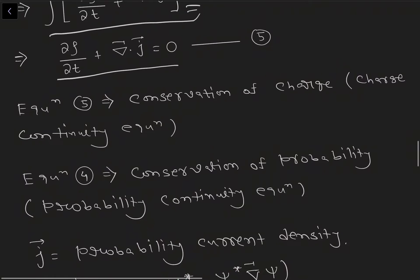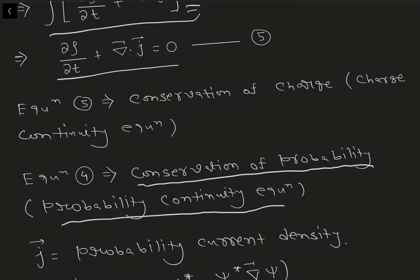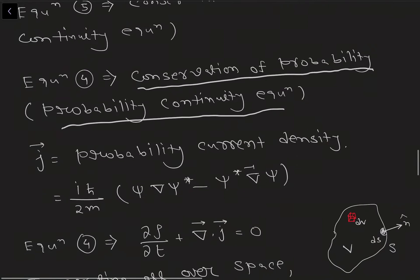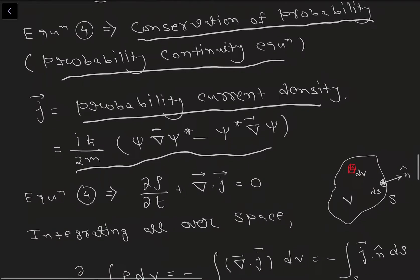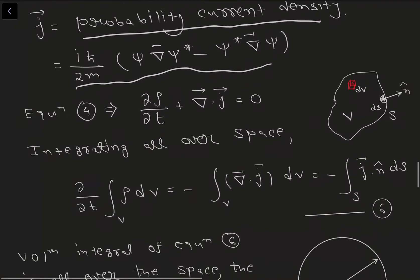Equation four can thus be called the probability continuity equation, and by analogy with charge conservation we can say it arises from conservation of probability, where J is the probability current density. J is given by (iℏ/2m)(psi ∇psi-star − psi-star ∇psi).